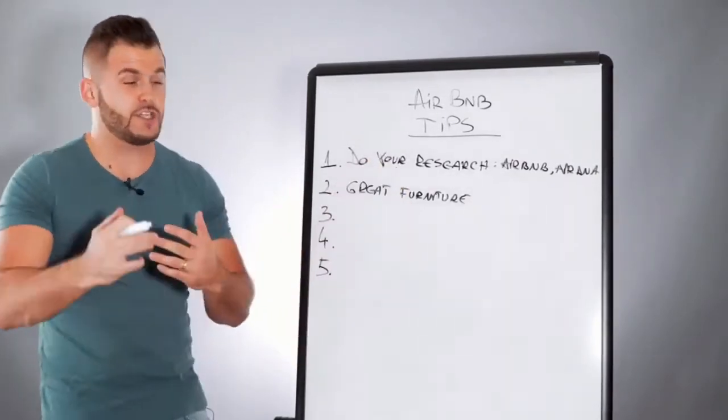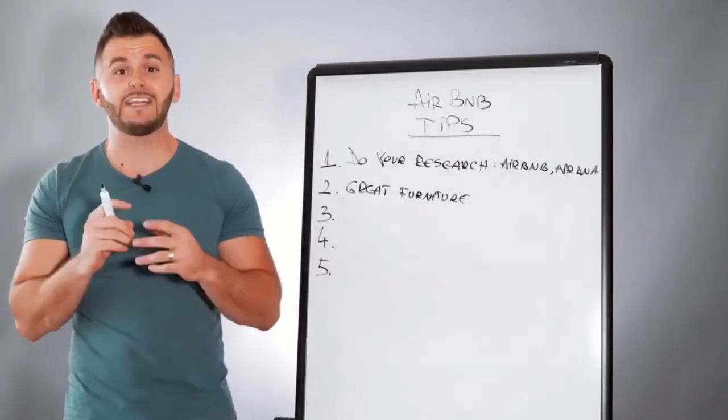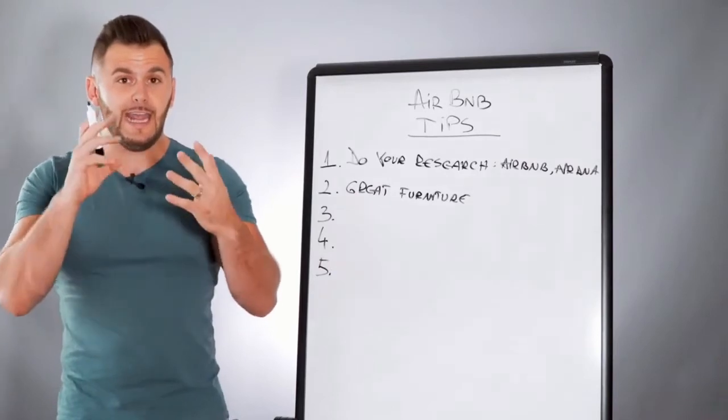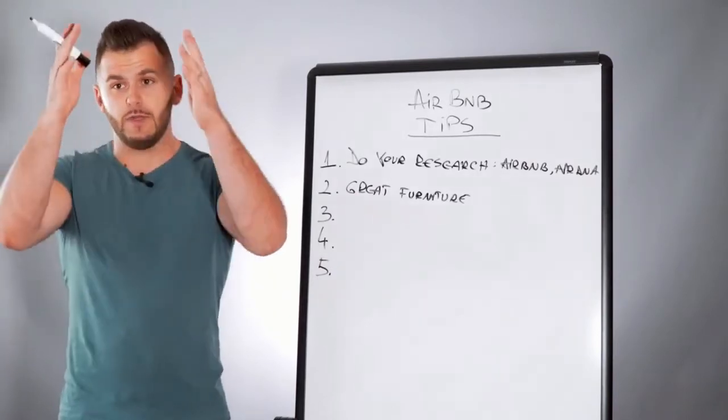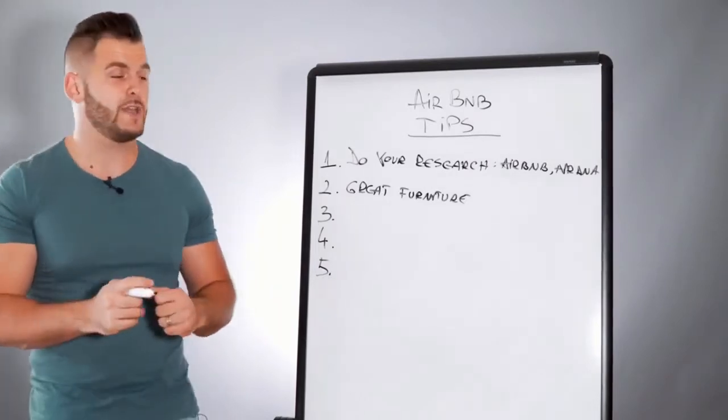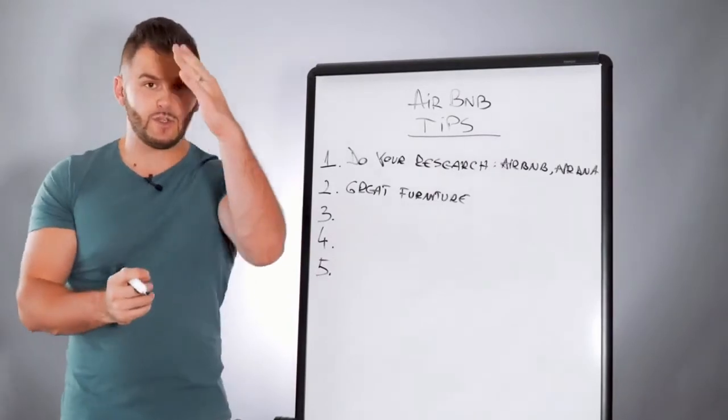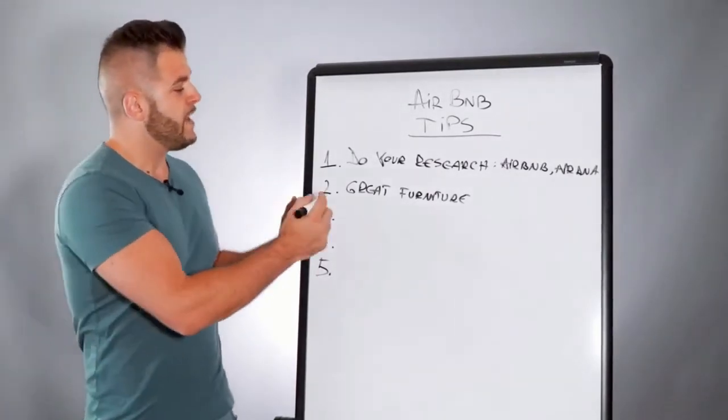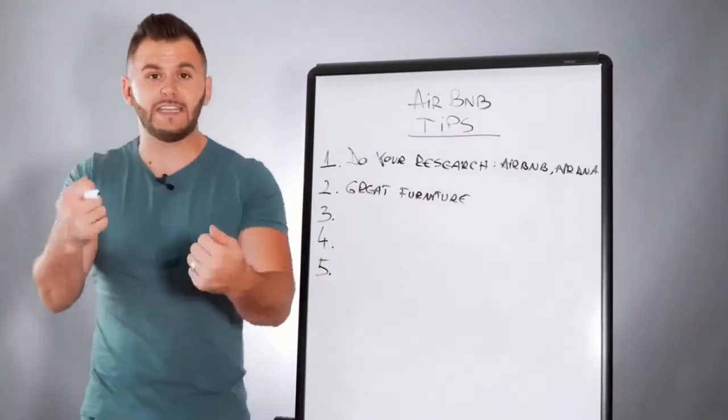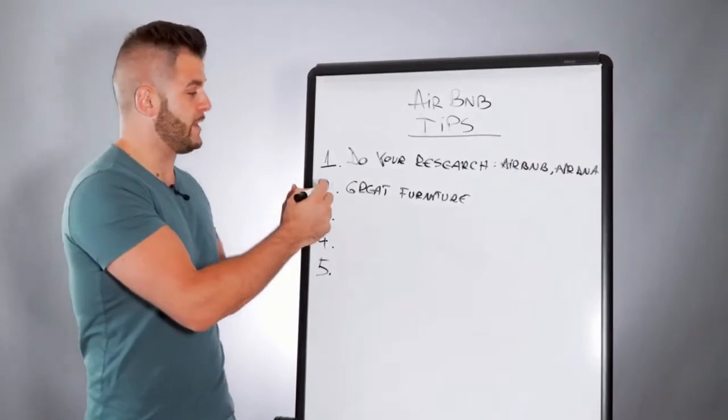And you want to make sure that you stand out. So again, going back to your research, start scrolling to the pictures that you see with the listings and see what gets your attention and start writing them down. You can make a sheet, you can make an Excel sheet, you can use Asana. I use Asana every time when I do my research and I make sure that I list all the things in there. Great furniture will grab attention and it'll help you stand out on the marketplace.